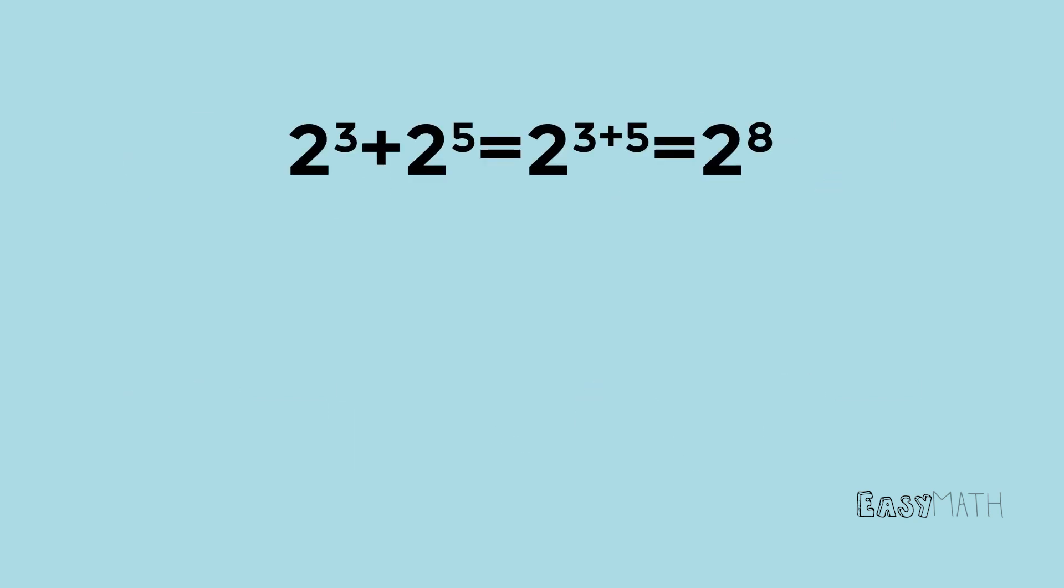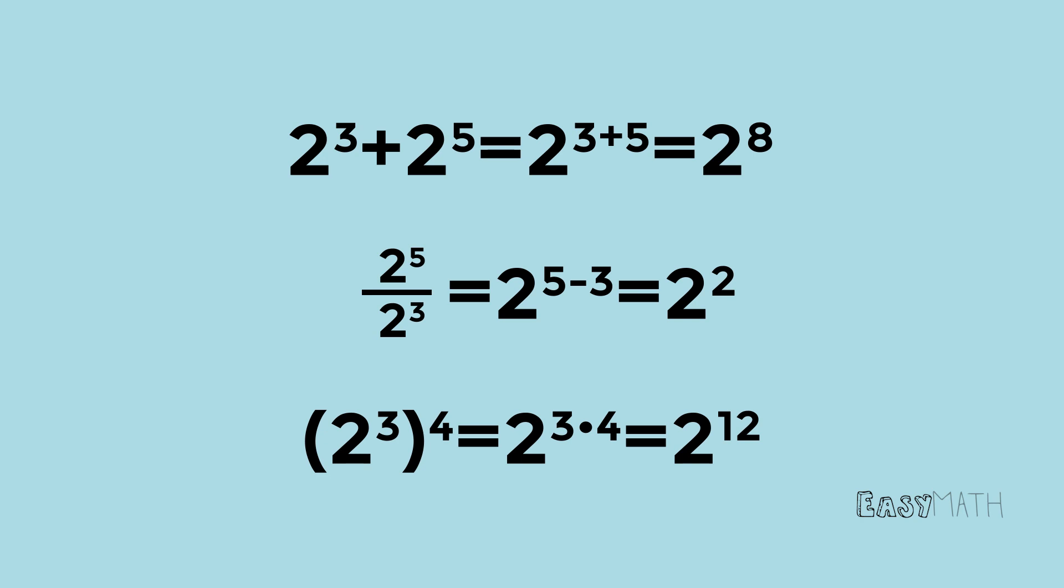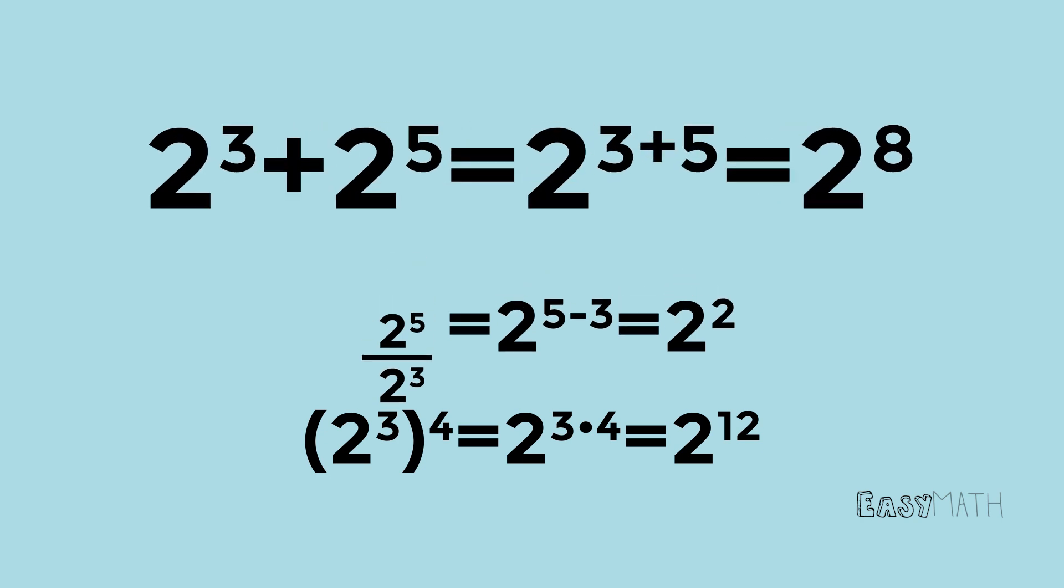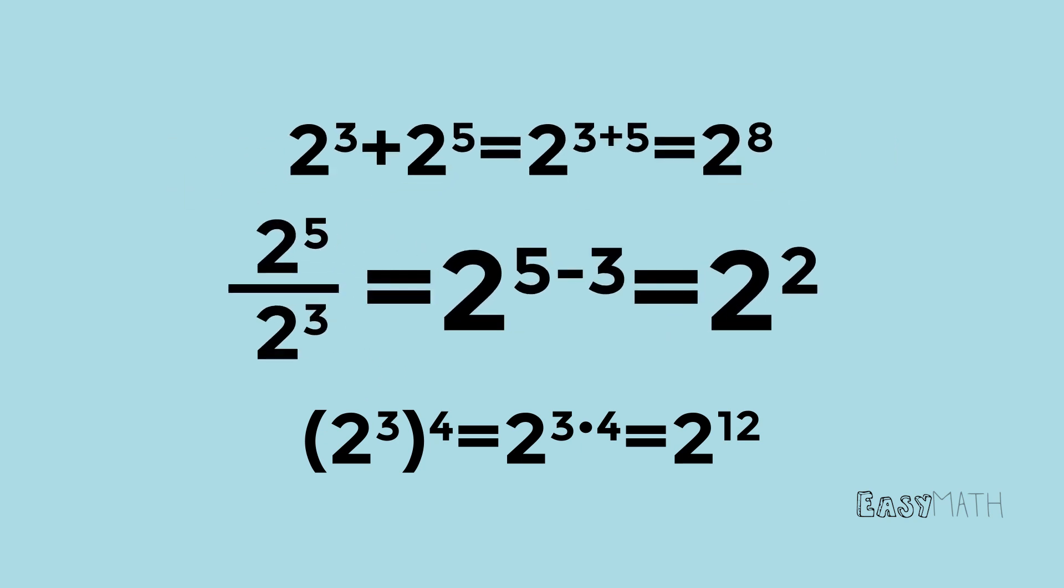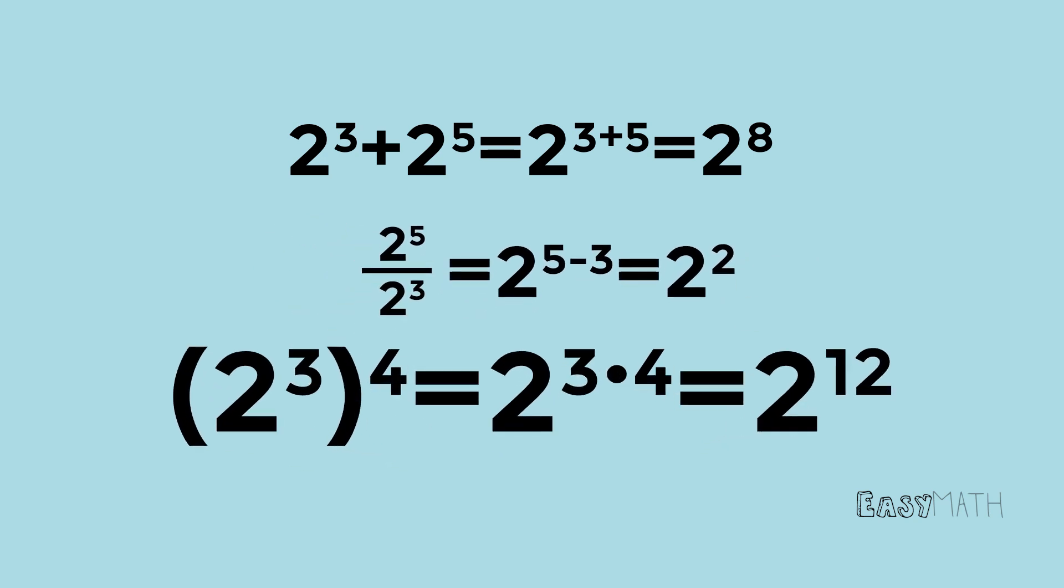Exponents can also be added, subtracted, and multiplied, but to do these, they must have the same base. You add exponents when two numbers with the same base are being multiplied. Subtract exponents when two numbers with the same base are being divided. Multiply exponents when an exponent is raised to another exponent.